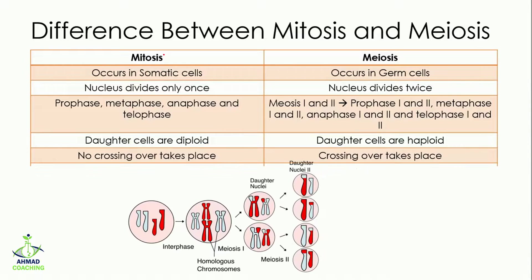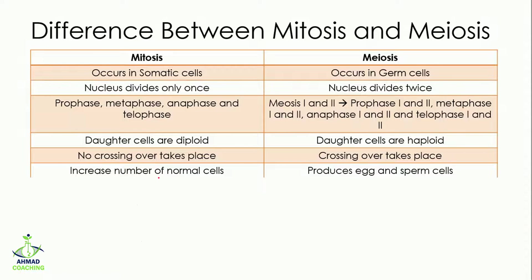In mitosis, no crossing over takes place. Crossing over is the exchange of genetic material between two homologous chromosomes, so that the new generation has something different compared to the parent cells. In meiosis, crossing over does occur, and it takes place during meiosis 1.